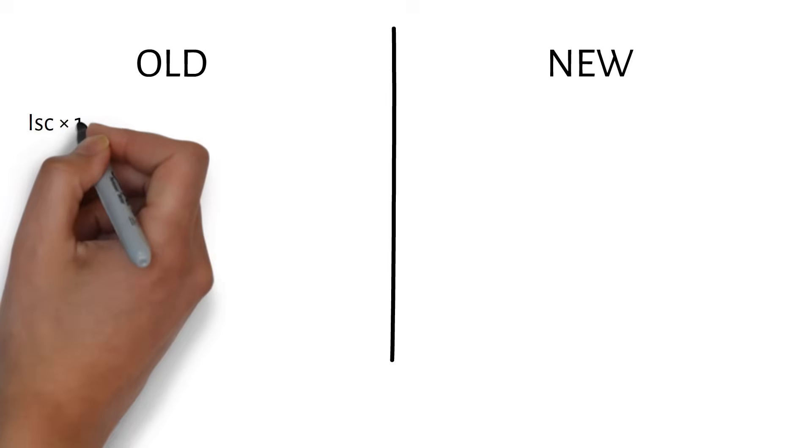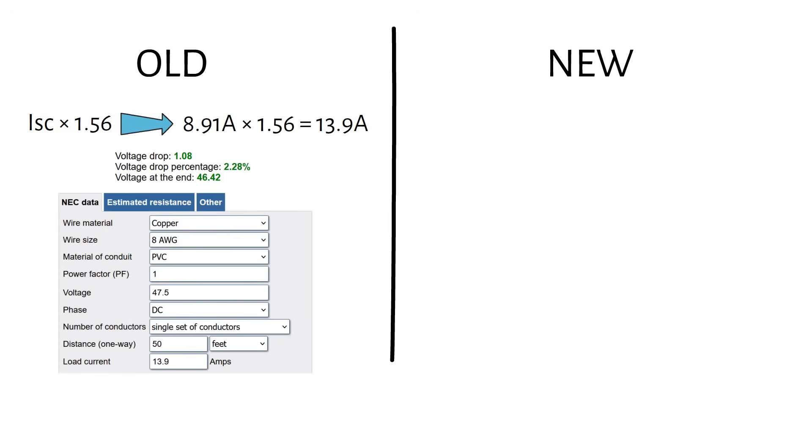I'm going to show you the old and new method, so you can see the difference. In my old method, I used ISC times 1.56 in the voltage drop calculation. So for this panel, it's 13.9 amps. So for the calculator, we enter the previously calculated voltage of 47.5 volts, a one-way distance of 50 feet and the current of 13.9 amps.